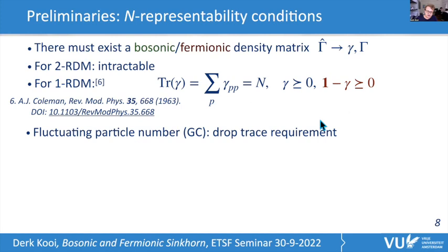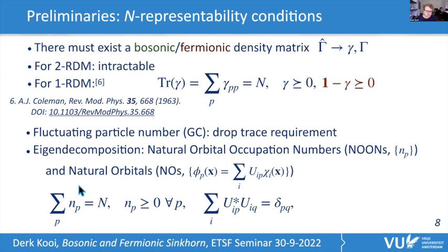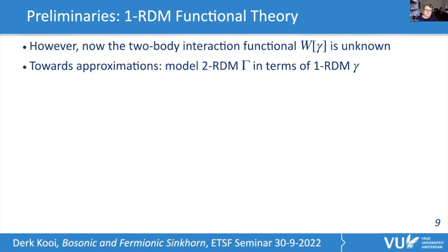In the grand canonical ensemble we simply drop the trace requirement. In practice, almost all functionals are written in terms of the eigen-decomposition of the 1-RDM: the eigenvalues are the natural occupation numbers n_p, and the eigenvectors are the natural orbitals φ_p expanded in a basis. The N-representability conditions become: occupation numbers sum to N, are positive semi-definite, orbitals are orthonormal, and for fermions occupation numbers are bounded above by one (Pauli condition).